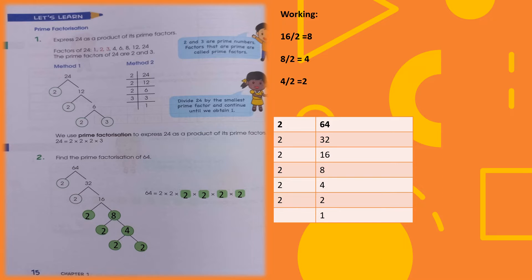In this slide we will look at prime factors. In question 1, we have to express 24 as a product of its prime factors. Basically, the smallest numbers with which we divide the number, reducing it down to 1, are called its prime factors. We divide until we obtain 1. There are two methods to represent this. In both methods, we start with the main number, 24.